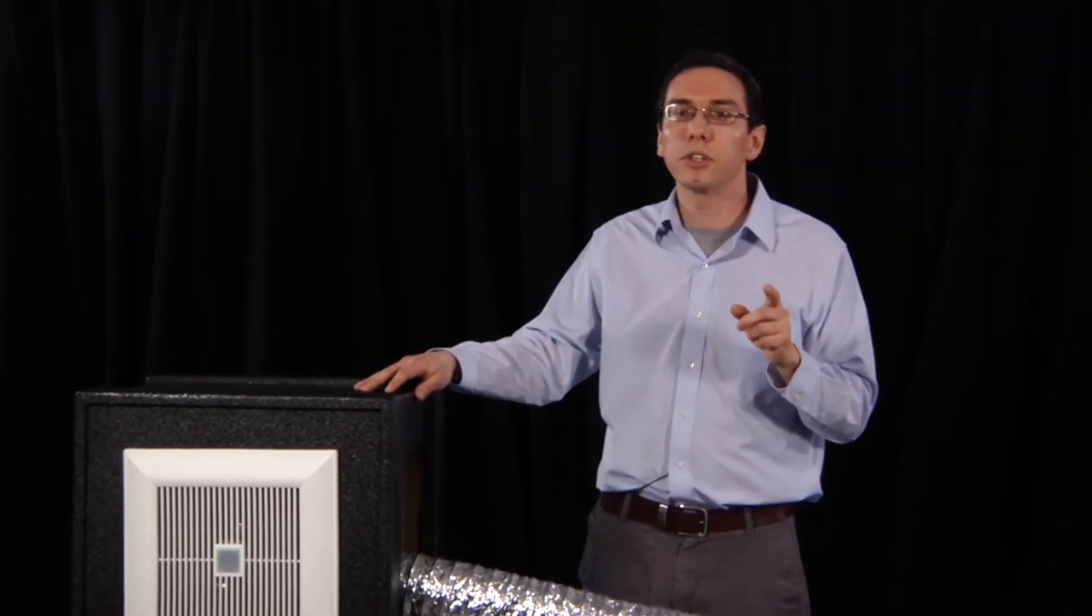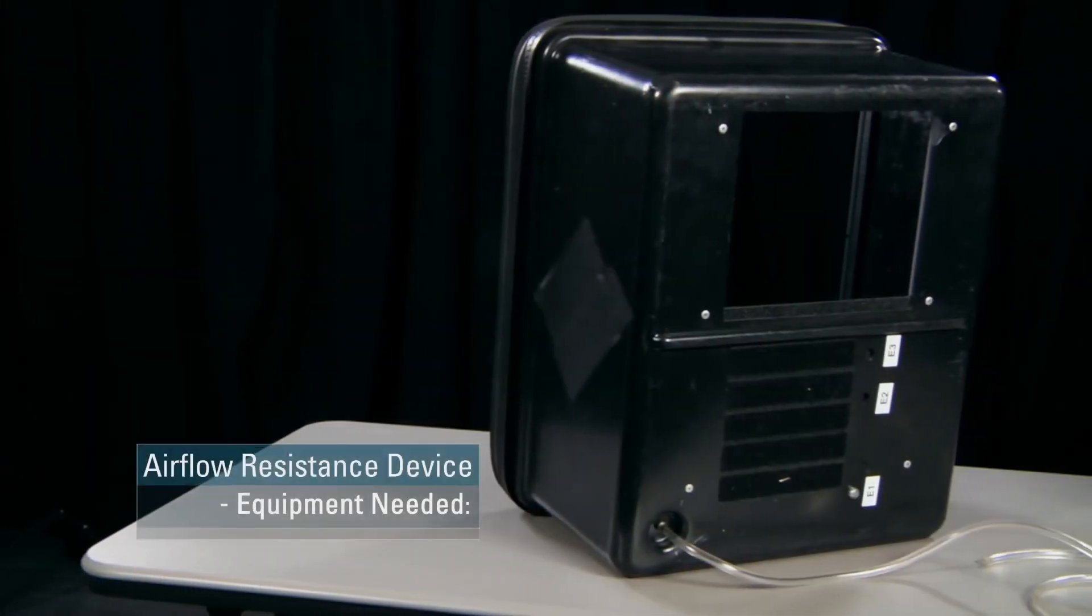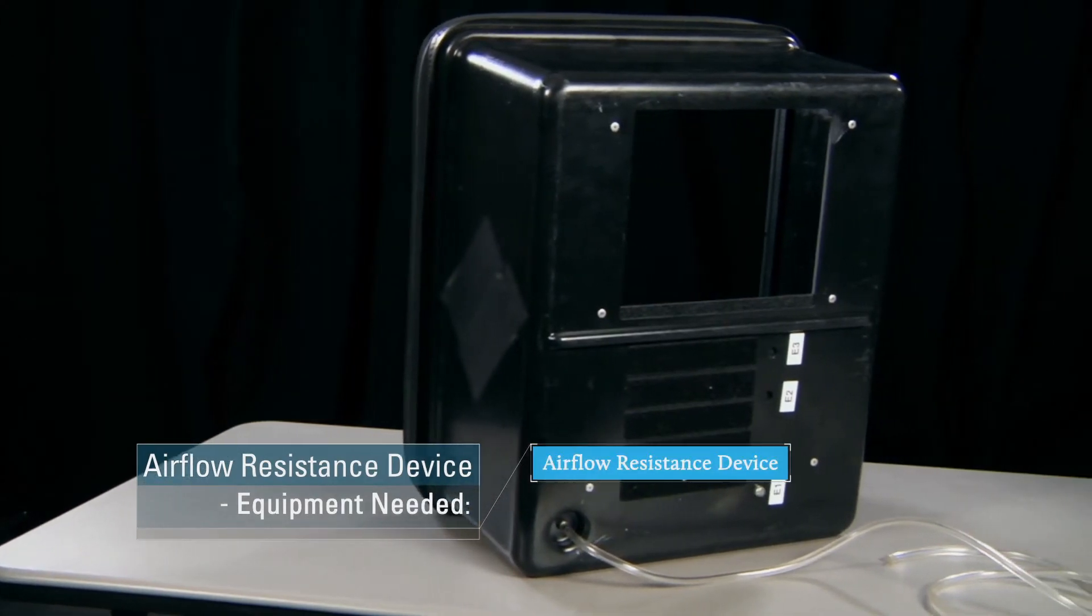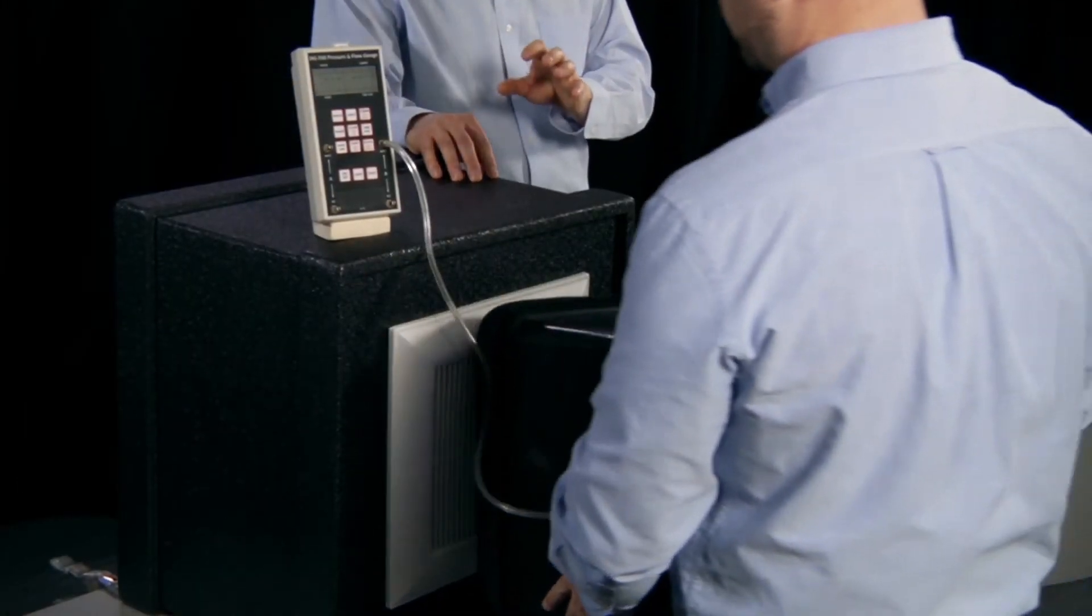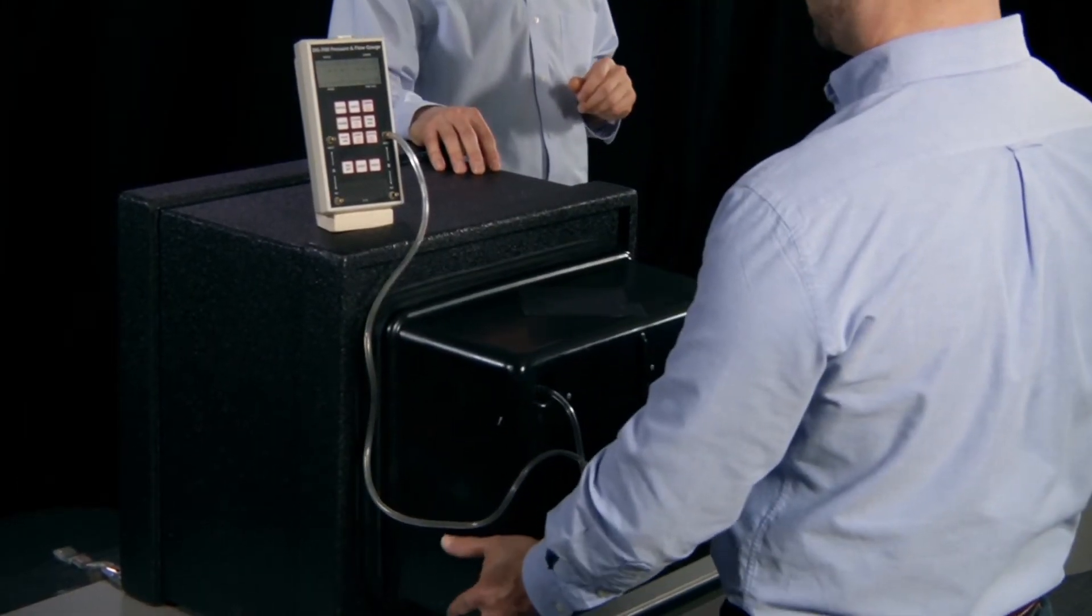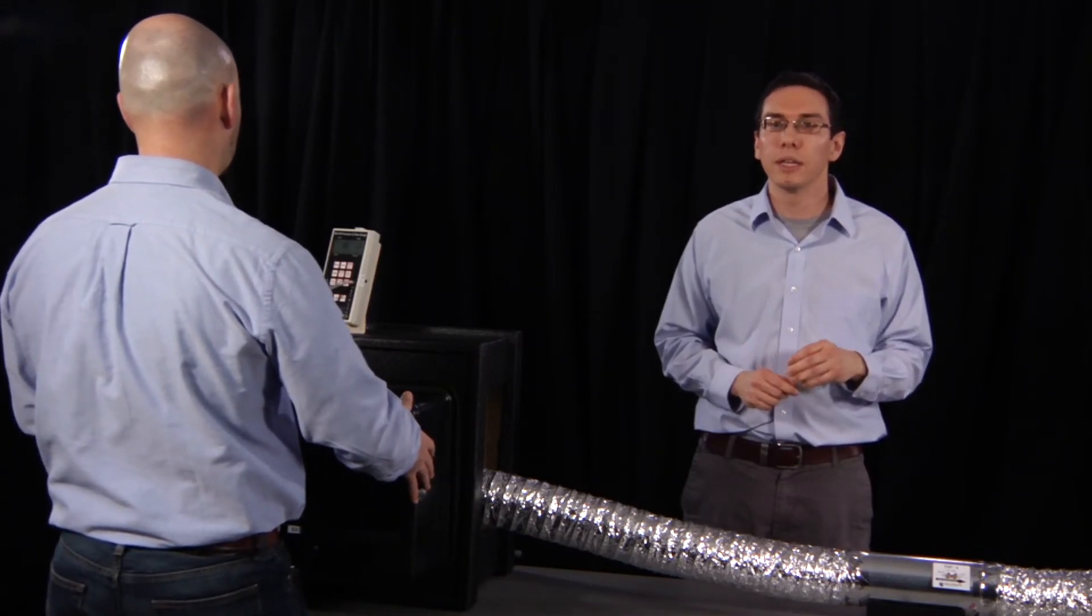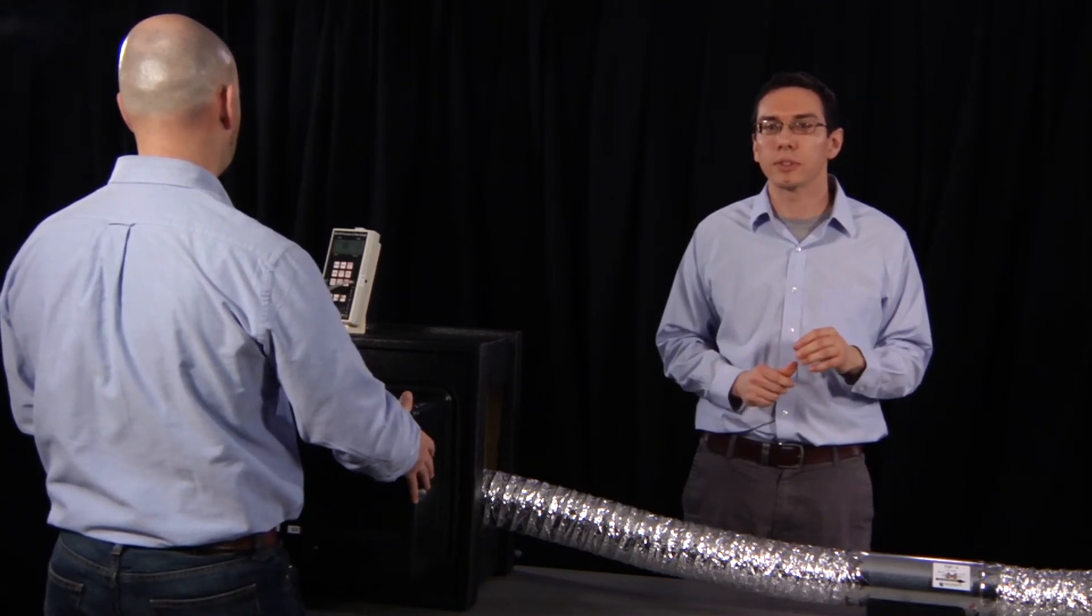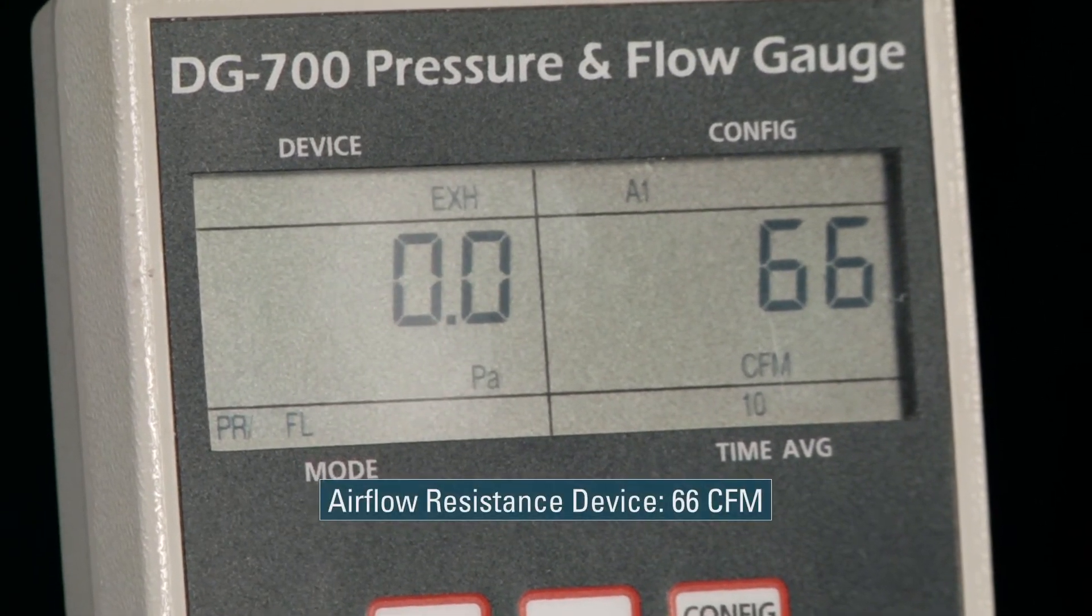Next, James is going to show you how to use an airflow resistance device. For this, you'll need just the airflow resistance device and a manometer. James will go ahead and place the device over the inlet terminal and measure the average pressure difference between the device and the room as well as the airflow over 10 seconds. He got a pressure of two pascals first and now we see that he's measured an airflow of 66 CFM.